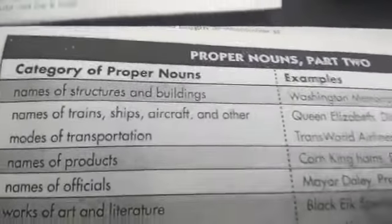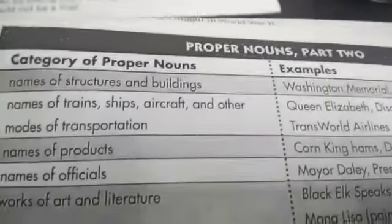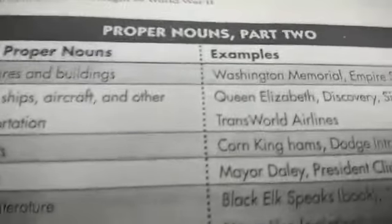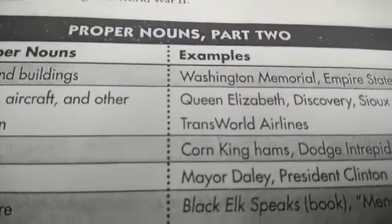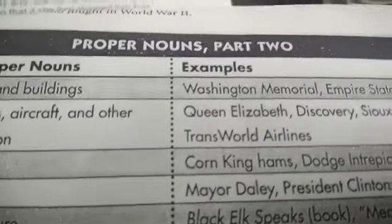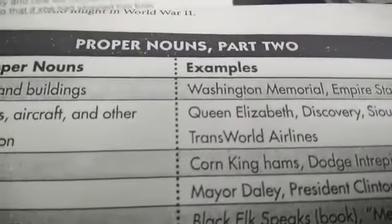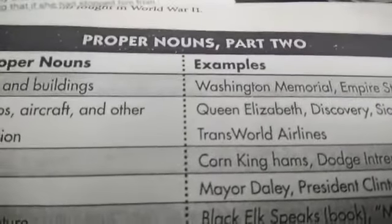Names of products are capitalized. For instance, Corn King's hams — the product name Corn King is capitalized.